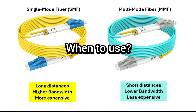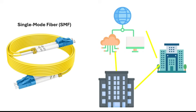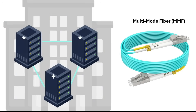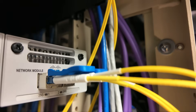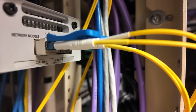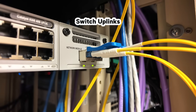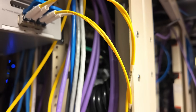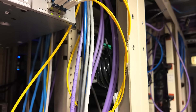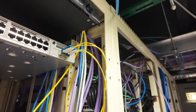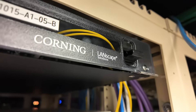When do we use single mode versus multi-mode? Single mode fiber is used for long distance, high bandwidth applications like inter-building connections and WANs, while multi-mode fiber is better suited for shorter distances like within a building or data center and is typically less expensive. Here in the data center, we have single mode fiber cables connected to our switch, used as switch uplinks, because single mode offers more performance over longer distances, can handle higher bandwidth, and is designed for higher data throughput.